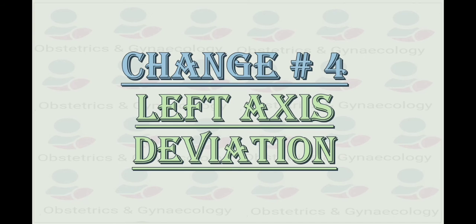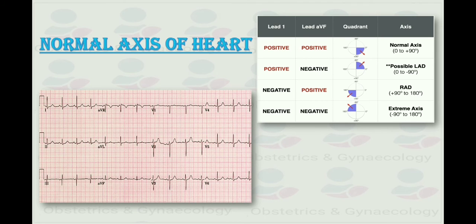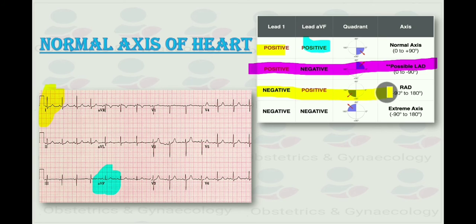Change number 4, left axis deviation. How to find the normal axis of the heart? In the normal axis, in lead 1 we have positive deflection and in lead AVF we have positive deflection. But if in lead 1 we have positive deflection and in AVL we have negative deflection, that indicates possible LAD, left axis deviation. If in lead 1 we have negative wave and in AVL we have positive wave, that indicates right axis deviation. If in both lead 1 and AVL we have negative waves, that shows extreme axis.